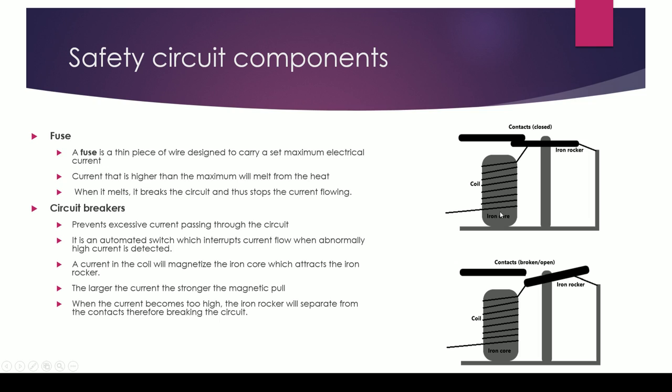At some point when the current gets too high, then the iron rocker will be attracted to the magnet enough for that to break the circuit open. And when that happens, the circuit will no longer have electricity flowing through it.